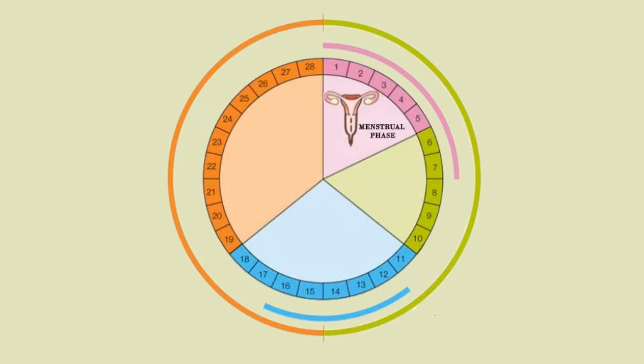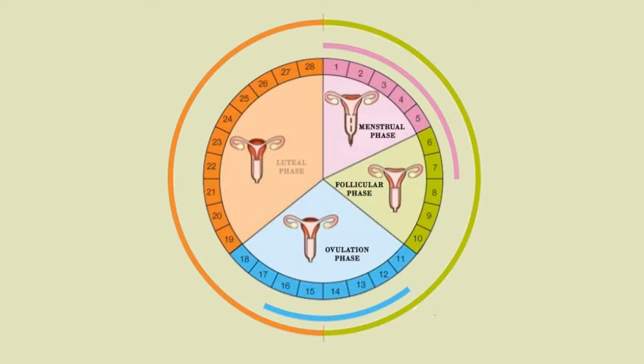The four phases are: Menstrual phase from day 1 to 5, Follicular phase from day 1 to 13, Ovulation phase on day 14, and Luteal phase from day 15 to 28.